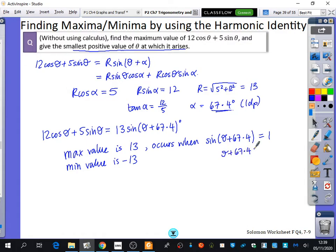Theta plus 67.4 must be equal to 90 degrees in order for the whole thing to be equal to 1, because the sine of 90 is 1. You could solve this equation. You could do the inverse sine of 1, and your calculator would give you 90. And so the value of theta is going to be 90 minus 67.4, which is 22.6 degrees.